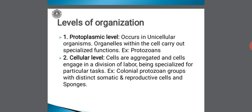The first being protoplasmic level. It occurs in unicellular organisms. Here, organelles within the cell carry out specialized functions. In the case of protozoans, they have only one single cell in their whole body, and the protoplasm — the living substance present inside their cells — along with their organelles, will perform different functions. Hence, the body organization is referred to as protoplasmic level. Examples: protozoans only.